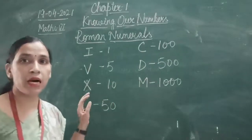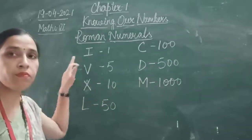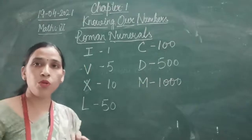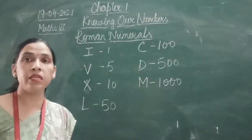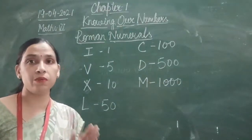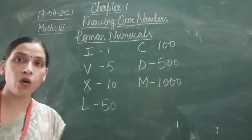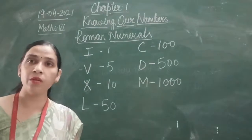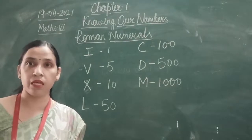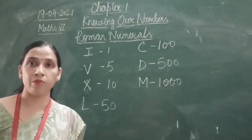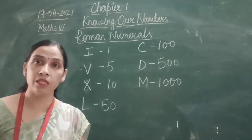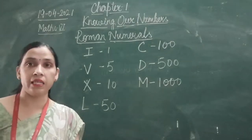Subtraction rule: from I, you cannot subtract anything. From V and X, you can subtract I. When a number is written before a Roman numeral, that will be subtracted. And a symbol written after a Roman numeral will be added to that number.